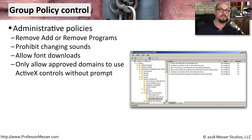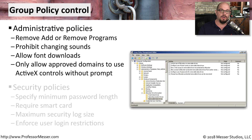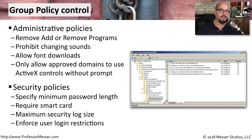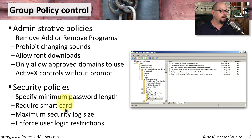Administrators often use group policy control to limit what people are able to do in an operating system. For example, you can allow someone to add or remove applications from their computer, or you can restrict someone from performing those functions. From a security perspective, we have a lot of control over what happens inside of a Windows domain. You can limit what the maximum or minimum password lengths would be, require that someone use a smart card to authenticate, set the size of the security log, and enforce user login restrictions across all systems on your network.